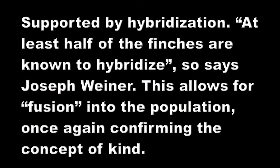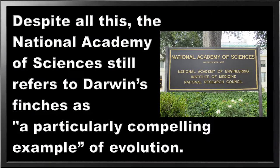This is supported by hybridization — when two species breed together and produce a hybrid, like a mule from a donkey and horse. Most hybrids are infertile. Hybridization occurs within these finches; they can breed together, confirming the concept of kind. Would you place a horse and a donkey in the same kind? Equine — same kind. Despite all this, the National Academy of Sciences still refers to Darwin's finches as 'a particularly compelling example of evolution.' Don't be fooled by that.